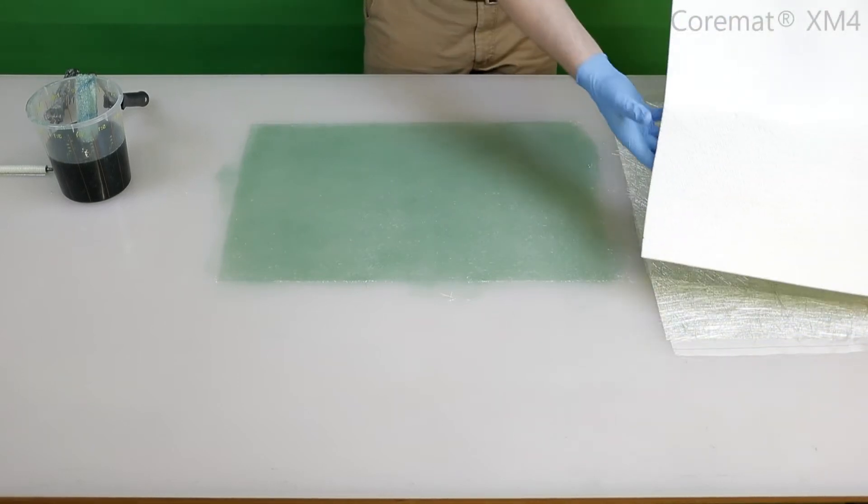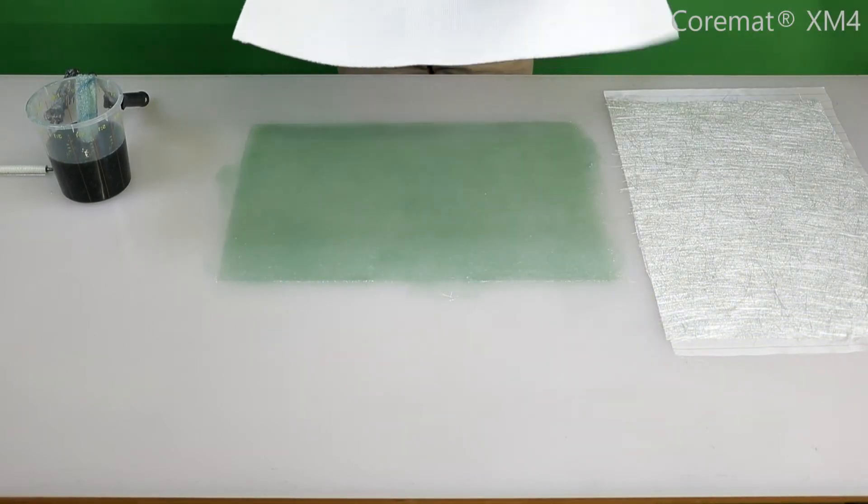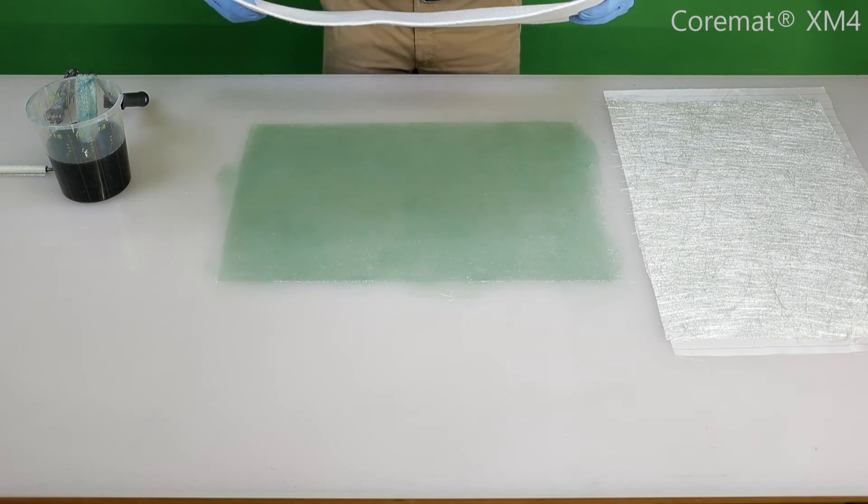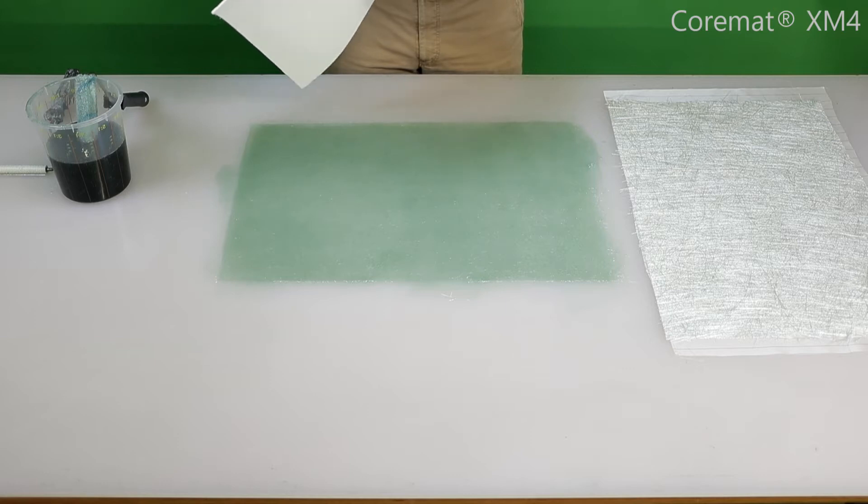Next up is the Cormat. For this panel we use the 4mm Cormat XM. The 4mm thickness creates the stiffness in this panel that we need for the application.